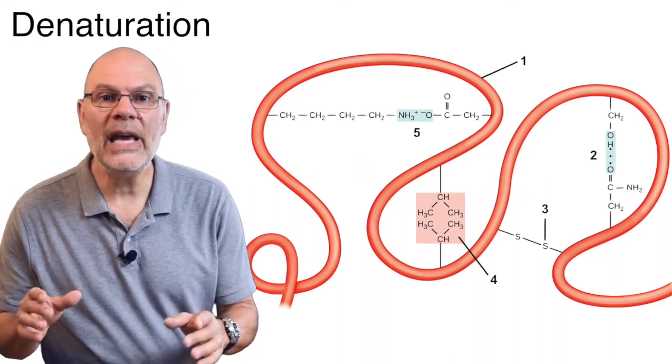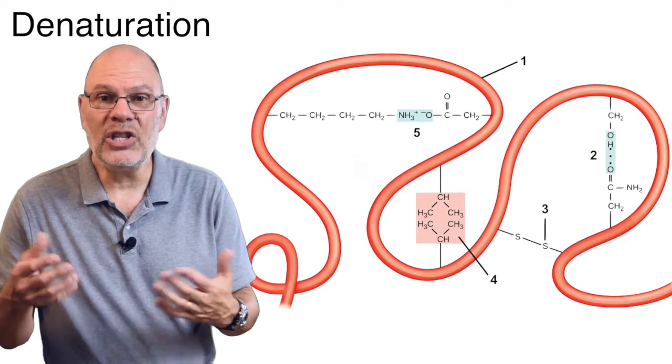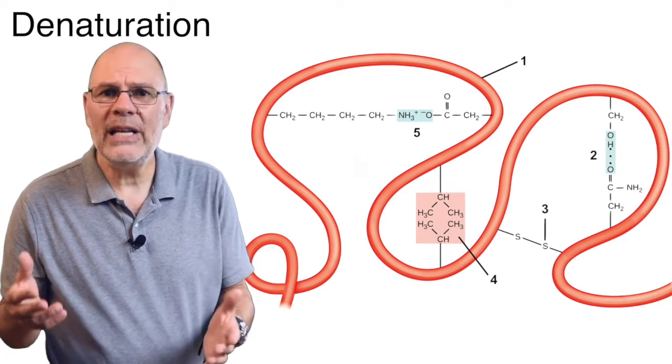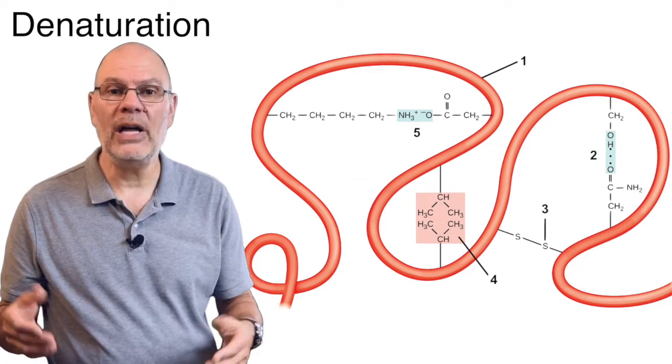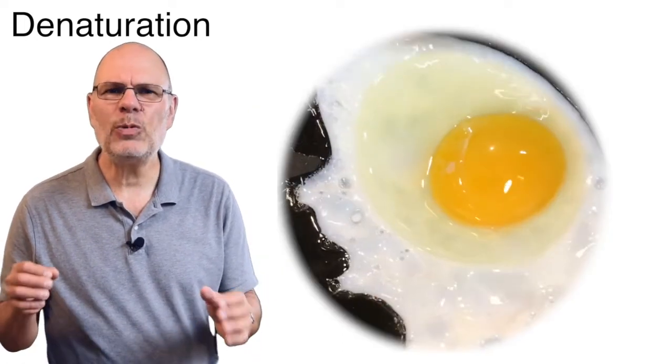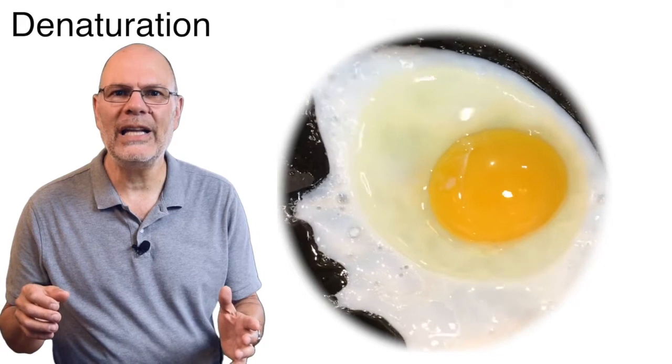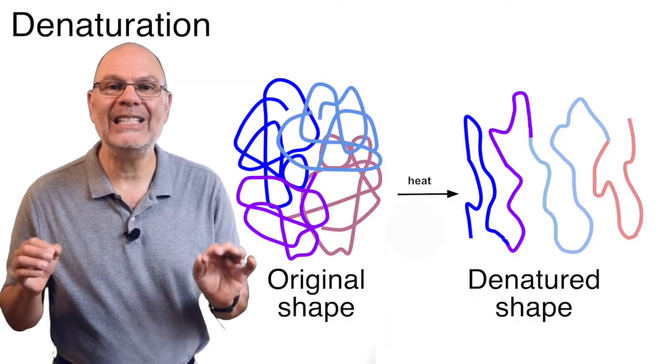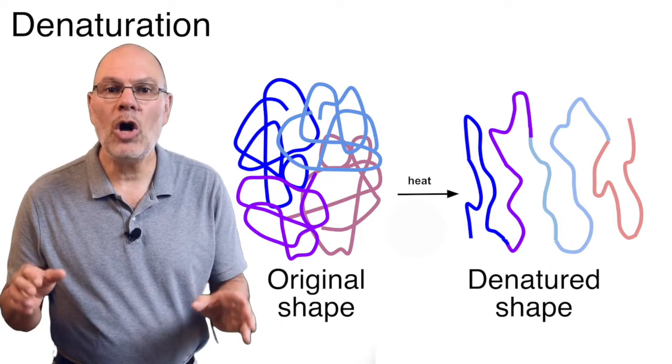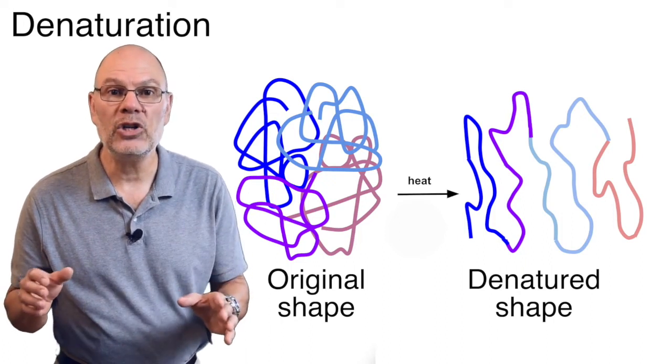Why? Because the new pH might disrupt ionic bonds at the tertiary level. Too many ions can do the same thing. Too much heat can disrupt hydrogen bonds and cause other changes. That's what happens to egg white when you fry an egg. These kinds of disruptions that change a protein shape are called denaturation, and they can cause proteins to lose their function.